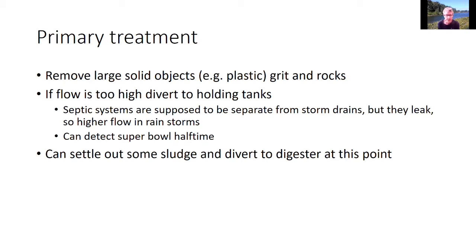You can settle out some of the sludge and divert it to the sludge digester at this point — some systems do that. Most sewage plants are at the very lowest part of the city so water feeds in by gravity. They have to pump the sewage up to a higher point in the plant so it can then run by gravity through the remainder of the plant.